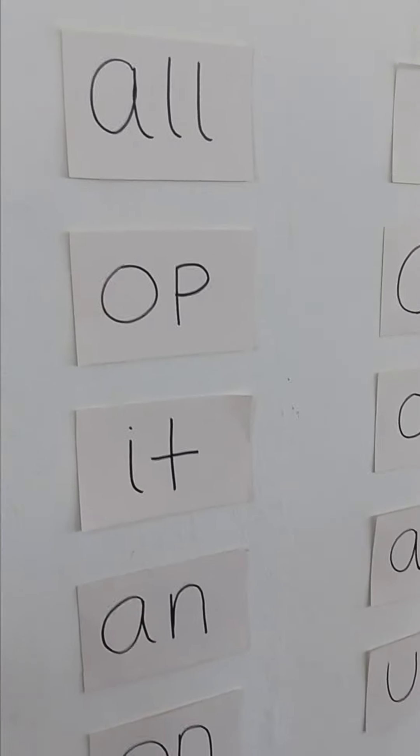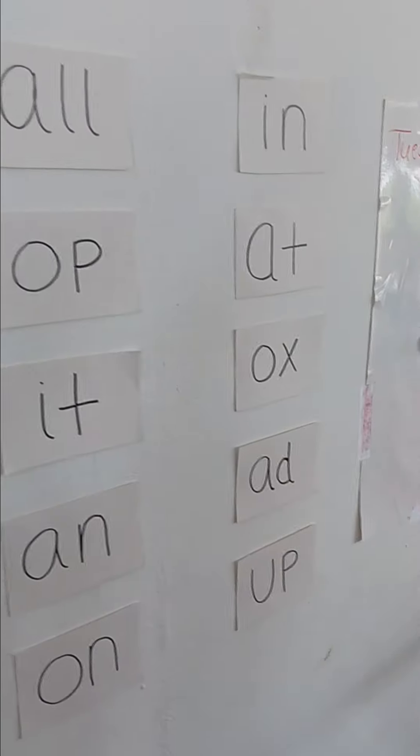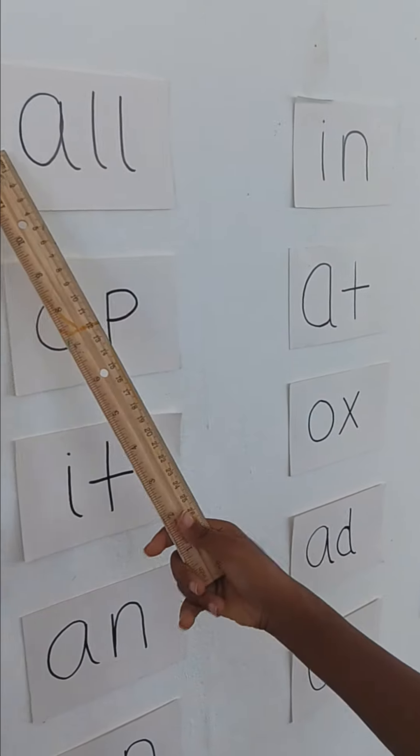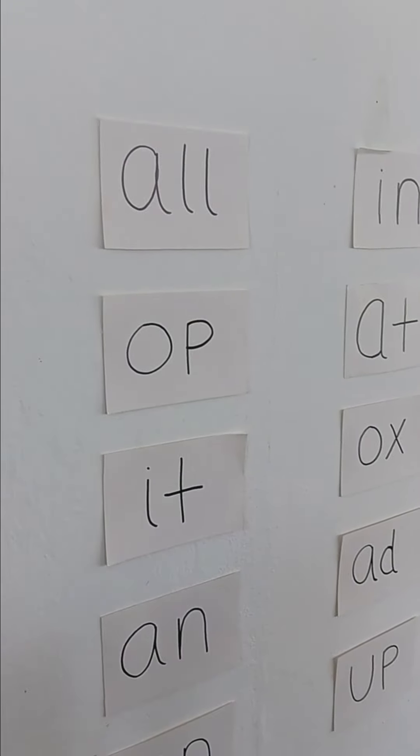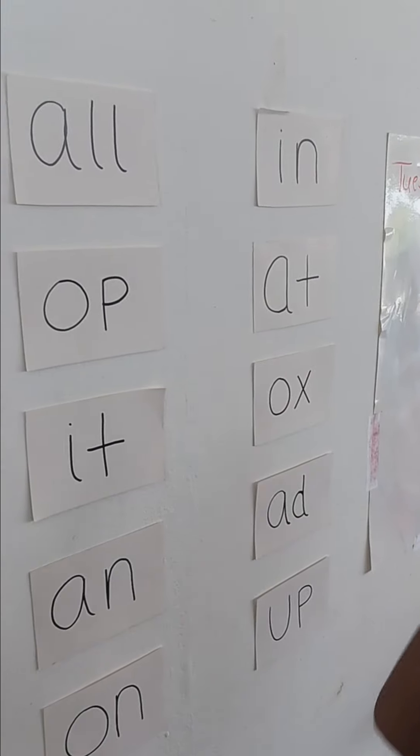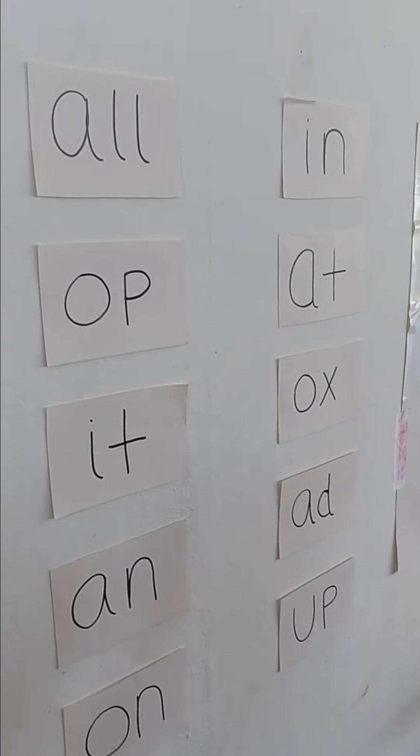Which one is all? So this one's all. A-L-L. All. How do you spell fall? F-L-L. I mean, F-A-L.